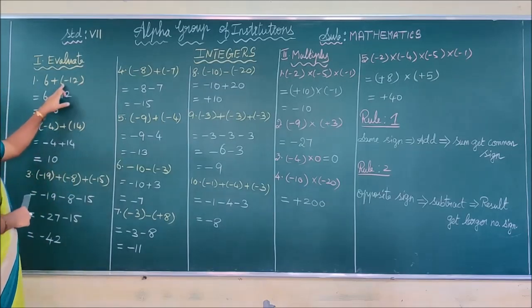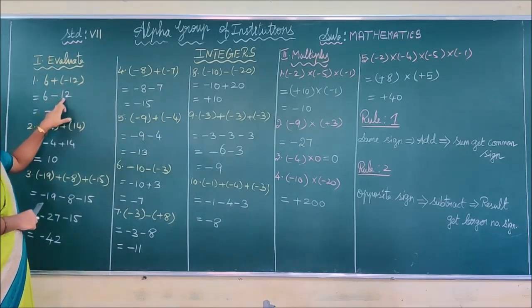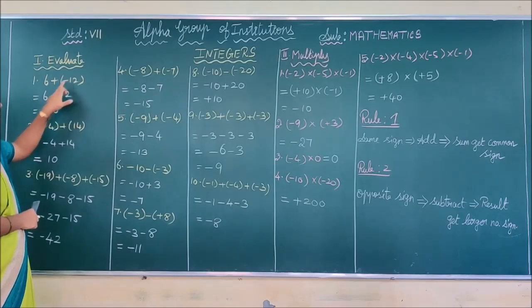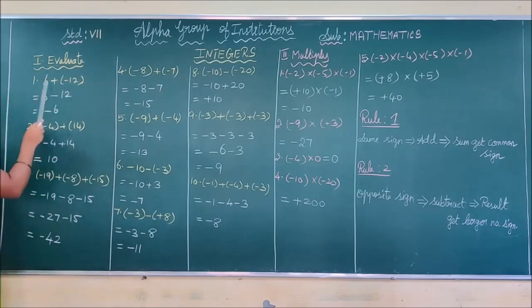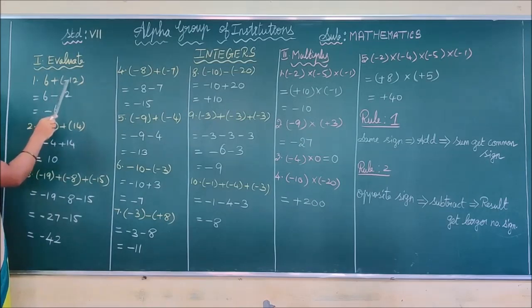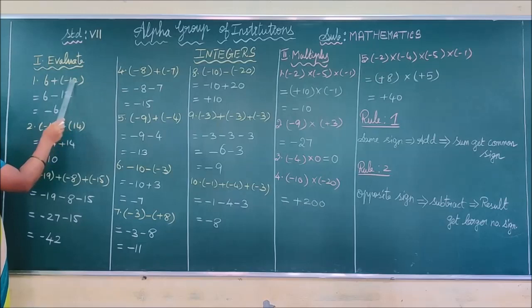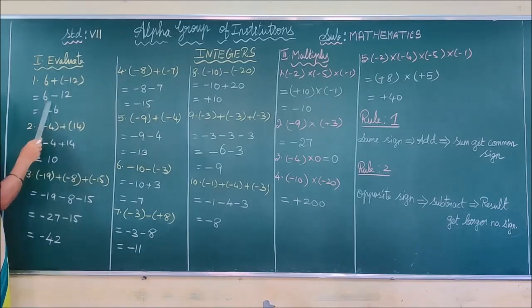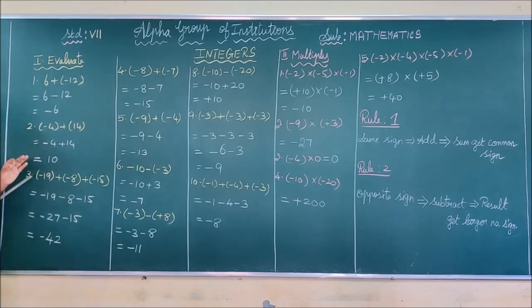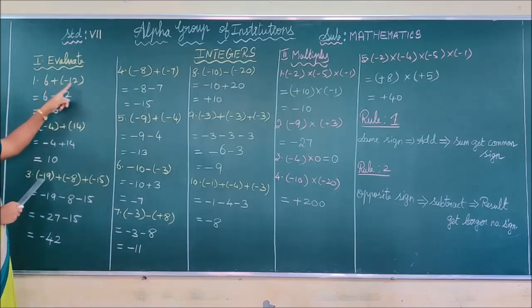For example, by removing the bracket, some students write it simply as 12. That is wrong. Before removing the bracket, you should multiply the signs. So: 6 plus into minus — you have to multiply the symbol. This is the procedure for removing brackets. Simply some students remove this bracket and write the number 12 as it is. Don't do that. You have to write it as 6 plus into minus, giving minus 12.